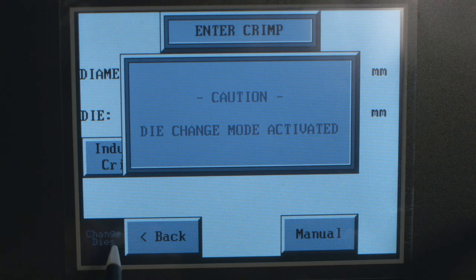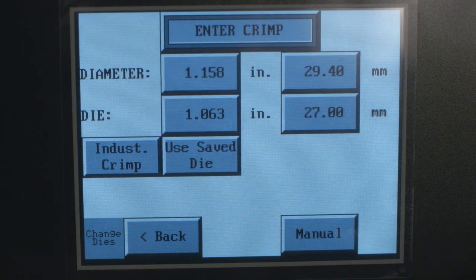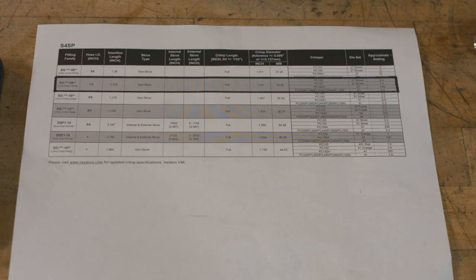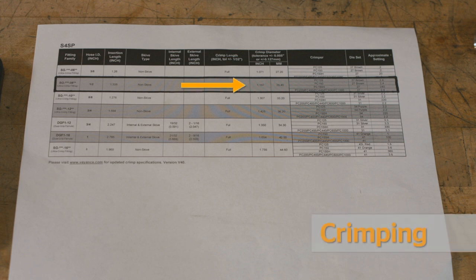Prior to crimping the hose, it is important to verify the insertion length. To make a manual crimp, two numbers are needed: the finished crimp diameter and the closed diameter of the die in either inches or millimeters.